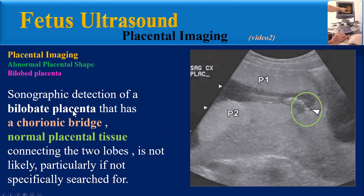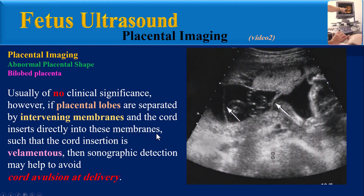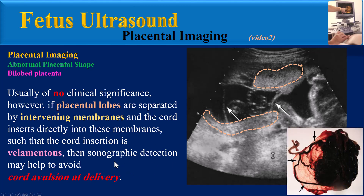Sonographic detection of a bi-lobed placenta with a chorionic bridge — that is, normal placental tissue connecting the two lobes — is not likely, particularly if not specifically searched for. This ultrasound image shows a bi-lobed placenta; the two lobes are separated by a thin bridge of placental tissue that covers the internal os. In this case the umbilical cord inserts into the bridge of tissue. A bi-lobed placenta is usually of no clinical significance.